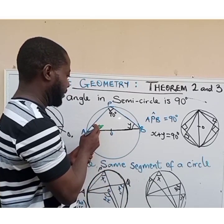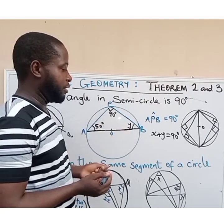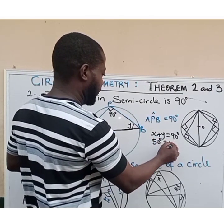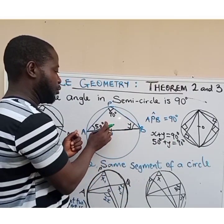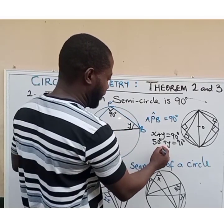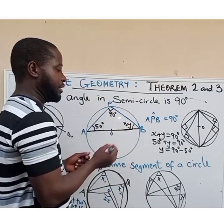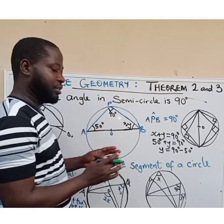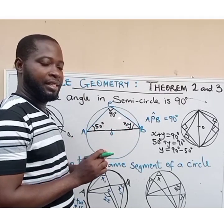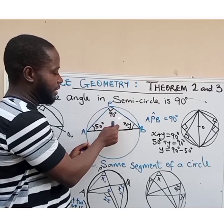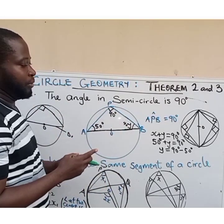For example, if x is 50 degrees and we have to find y, then 50 degrees plus y equals 90 degrees. So y equals 90 degrees minus 50 degrees, which gives us 40 degrees. When you have all three angles together they give 180 degrees, but the two of them sum up to 90 degrees since we already have a 90-degree angle. That is what the angle in a semicircle theorem is talking about.